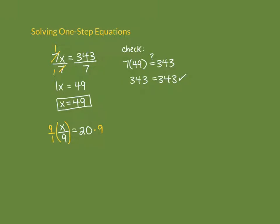We can cross-reduce: 9 and 9 both divide by 9, reducing to 1. If you prefer, think of it as 9 times x over 1 times 9, giving 9x over 9, which equals 1x or just x. So x equals 20 times 9, which is 180. Box that up, then check to make sure it's true.